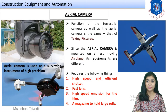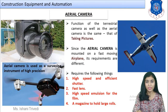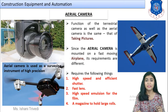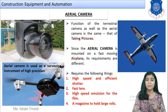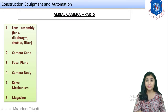The third requirement is high-speed emulsion for the film. The photographs are taken on film; if you want digital images and direct conversion to 3D models, that is done through automation in drones. The standard film mounted in the camera is the high-speed emulsion film. The fourth requirement is a magazine to hold large rolls, since the number of photographs taken is very large.